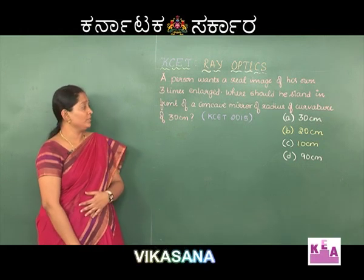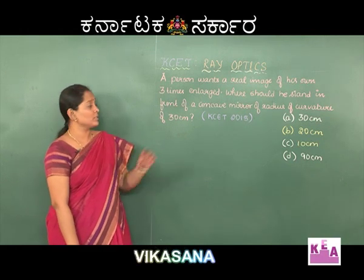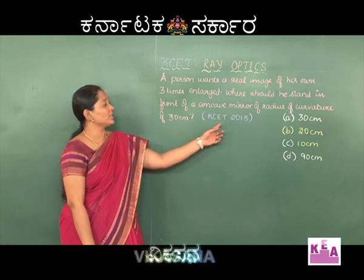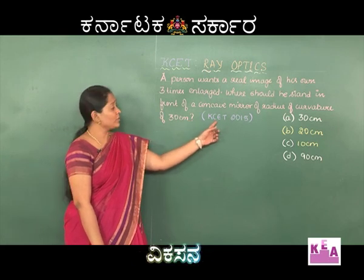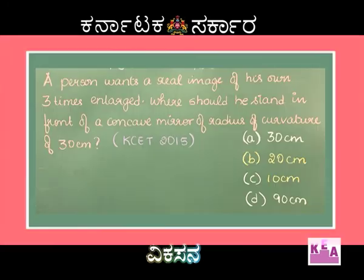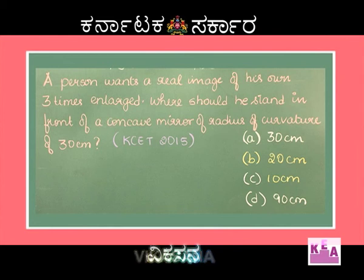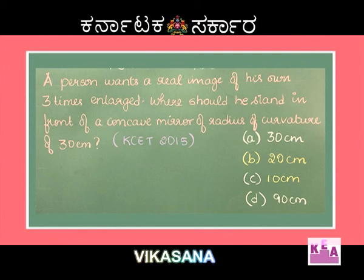Moving on to the next question - please make a note here students, this is a question which was asked in the previous year, so it is a very important question. A person wants a real image of his own three times enlarged. Where should he stand in front of a concave mirror of radius of curvature 30 centimeters? The options are: A) 30 cm, B) 20 cm, C) 10 cm, and D) 90 cm.